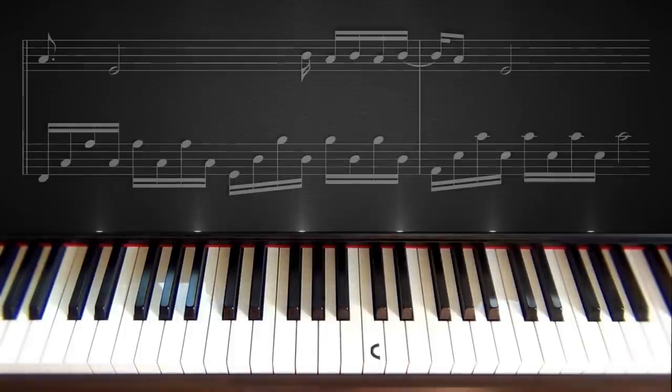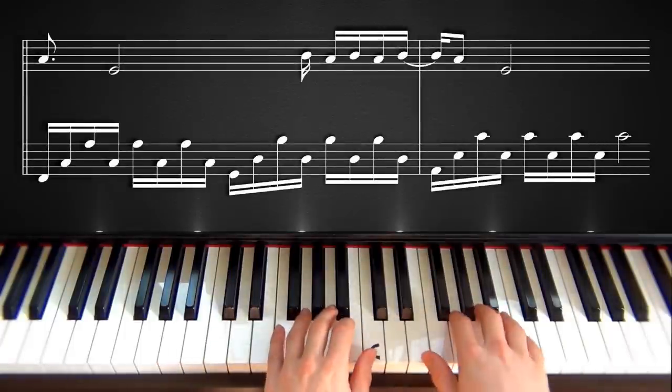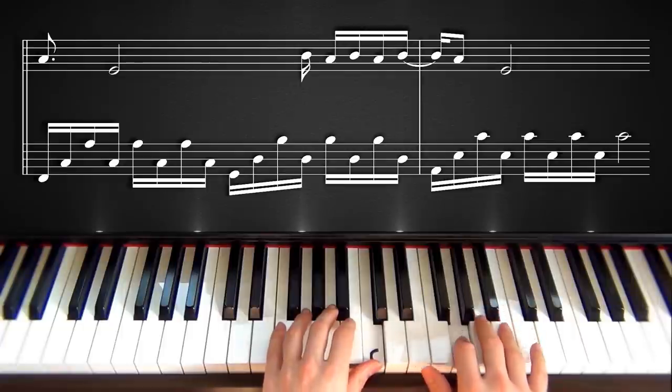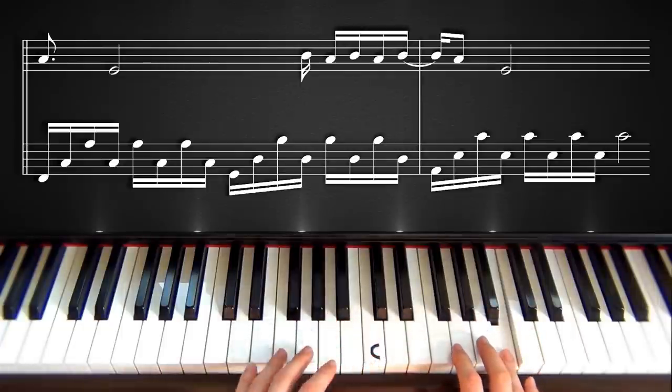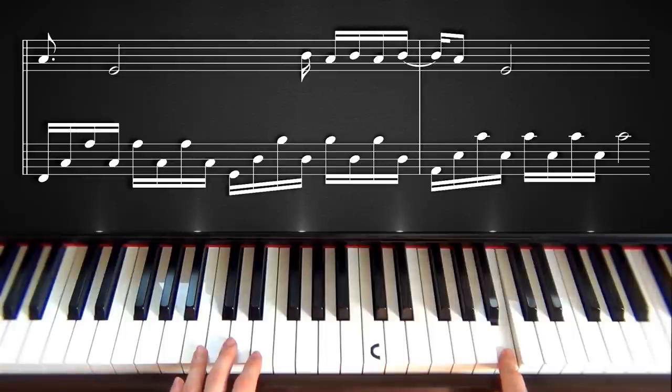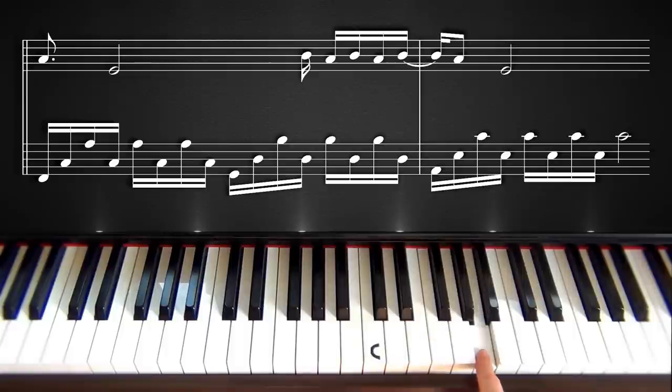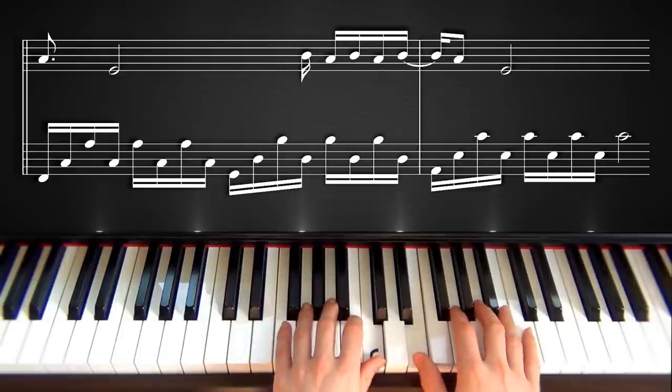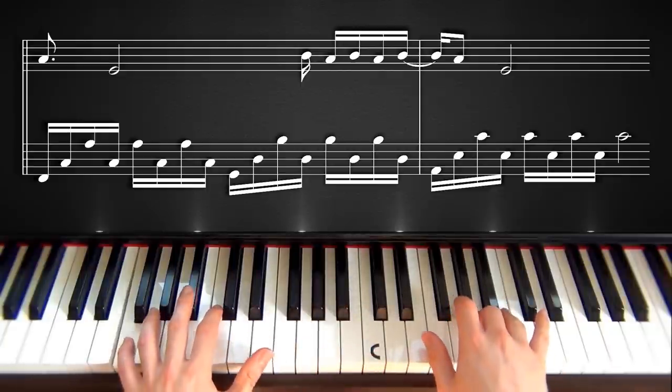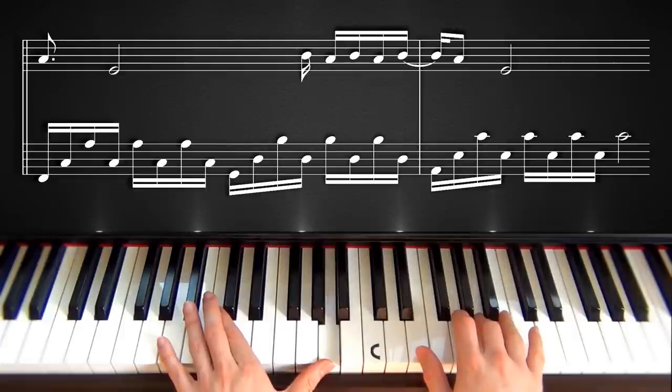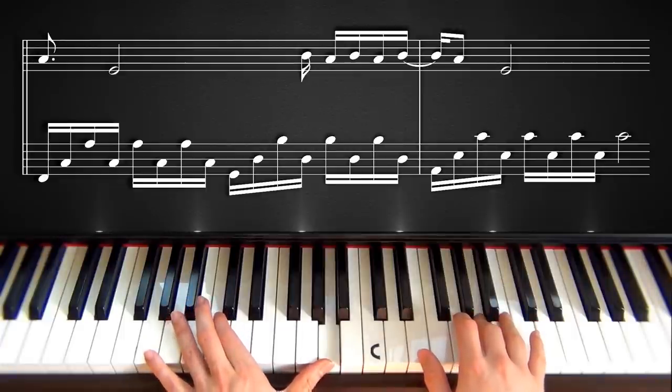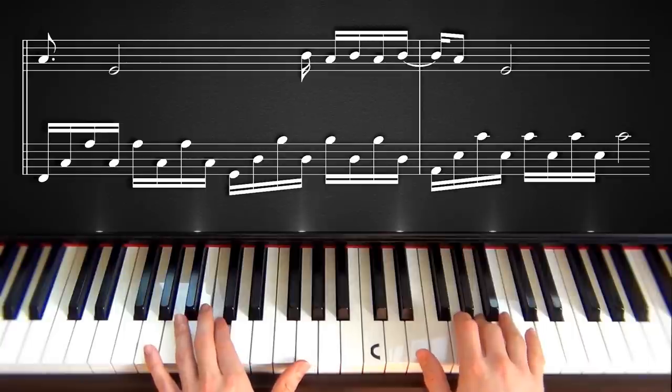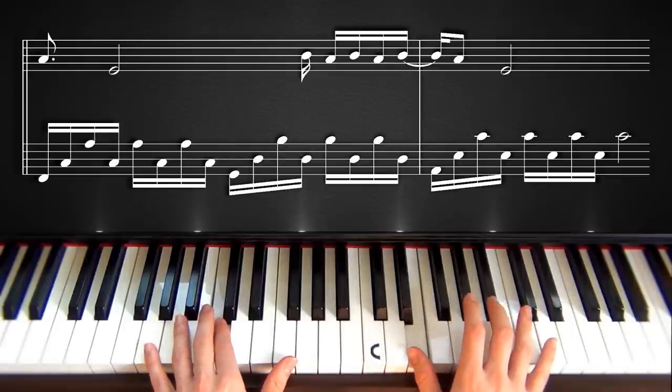Okay, so now to the right hand. So in the first part, we left off right here. So your right hand is already on this B up here. And from this B, you will go down to A. And with playing this A, you will start to play the left hand as well. On the second C you play with the left hand, on the first chord, you will play E with your right hand.